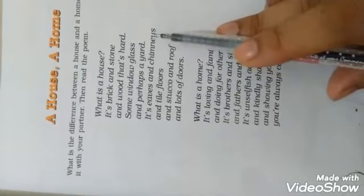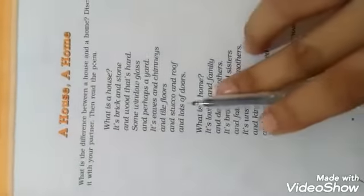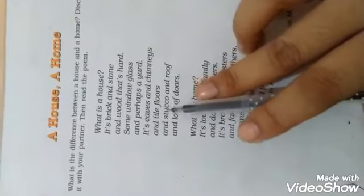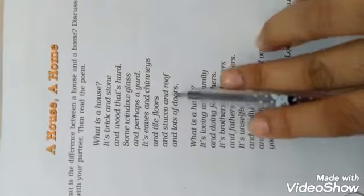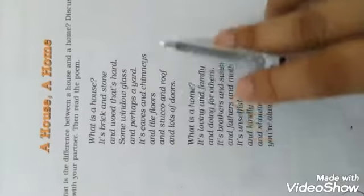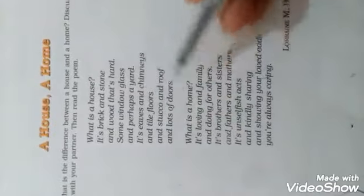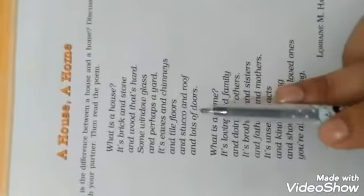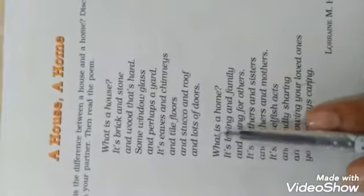There are eaves also, and chimneys like the kitchen, and tiles and floors and tiles and roof. Stucco means plaster. And roof and lots of doors. According to Lorraine M. Halli, this tells us that house is made like the house, with these things and doors.